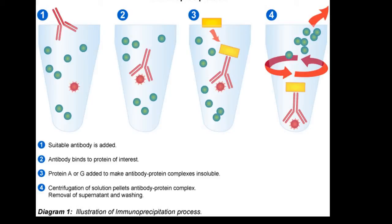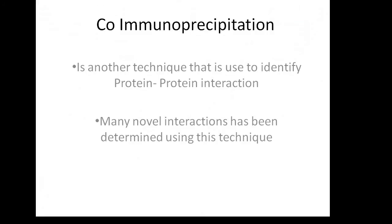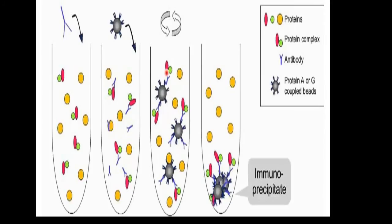There are several types of immunoprecipitation techniques, such as co-immunoprecipitation. Co-immunoprecipitation is a technique used to identify protein-protein interactions, and it has been used to determine many novel protein-protein interactions in various species including human, C. elegans, and Drosophila.